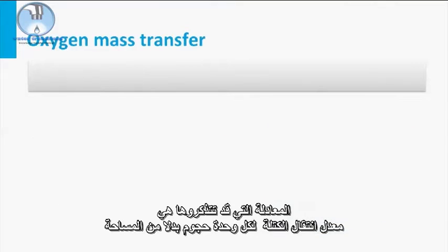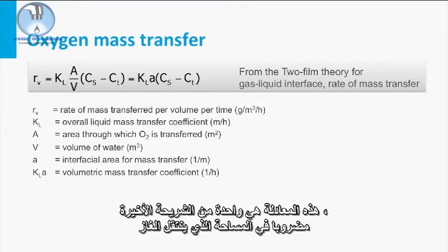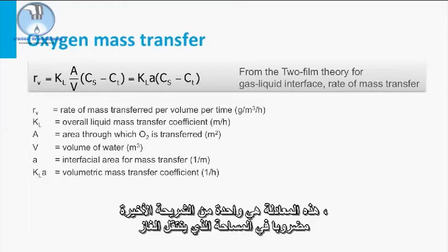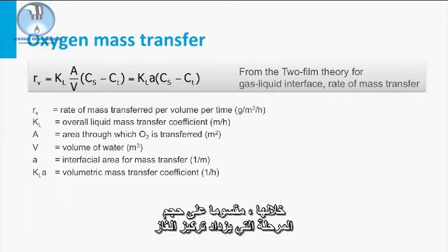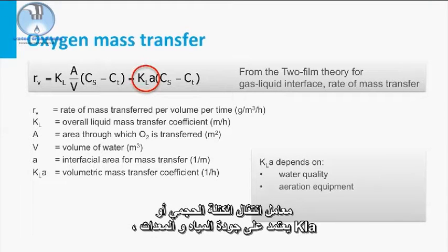An equation you might recognize is the mass transfer rate per volume instead of area. This equation is the one from the last slide multiplied by the area over which gas transfer takes place, divided by the volume of the phase in which the gas concentration increases — in our case, the water volume. The volumetric mass transfer coefficient, or KLA, depends on the water quality and the equipment.